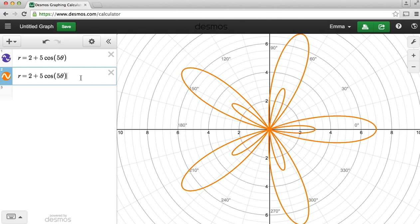Now we're going to add restrictions to our second equation. We use curly brackets, which again you can find in that ABC menu. And let's type 0 less than theta less than 30.